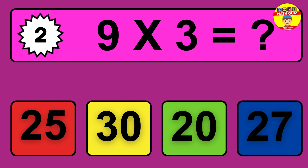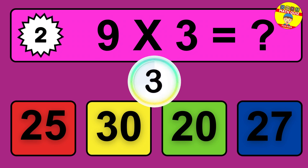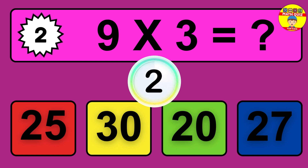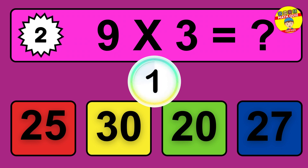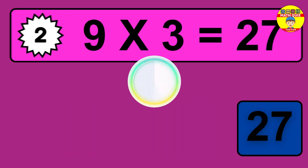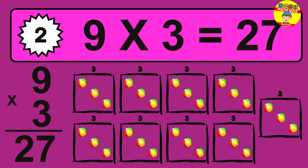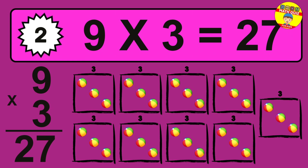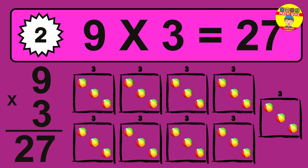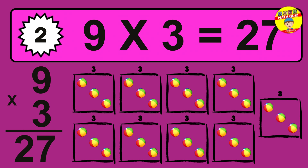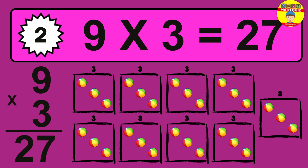Question 2. 9 times 3 equals what? The answer is 9 times 3 is 27. To calculate, we have 9 groups with 3 balls each one. So how many balls do we have? 27 balls.